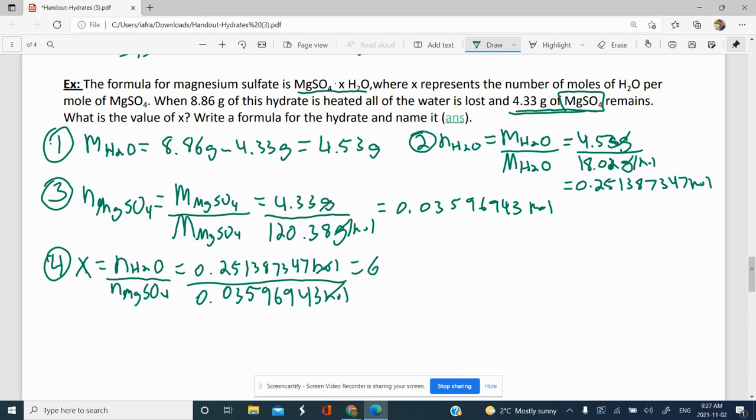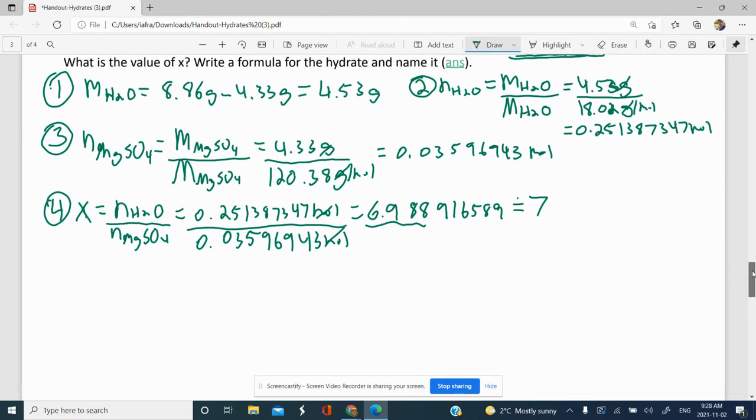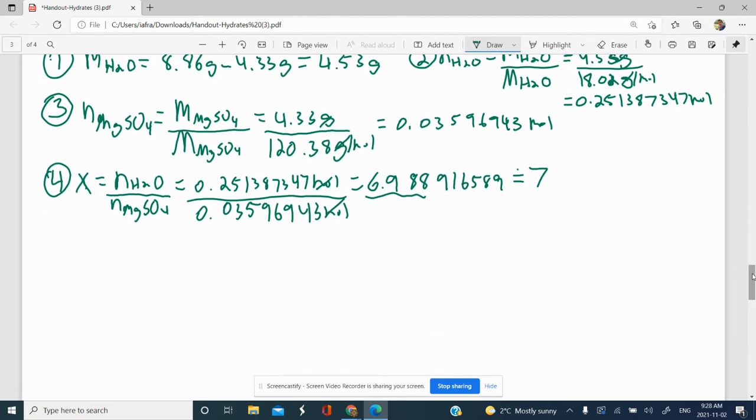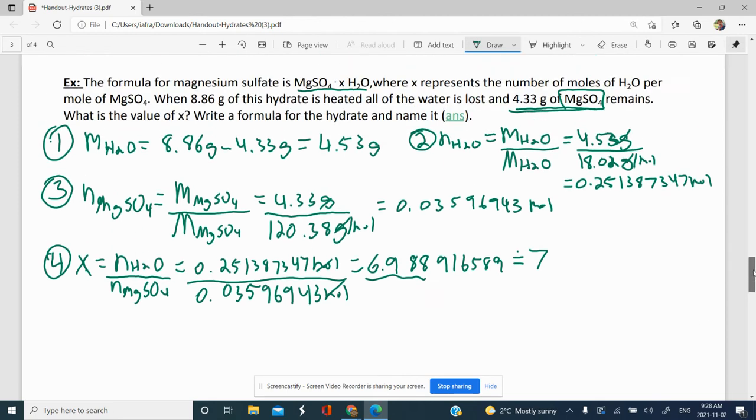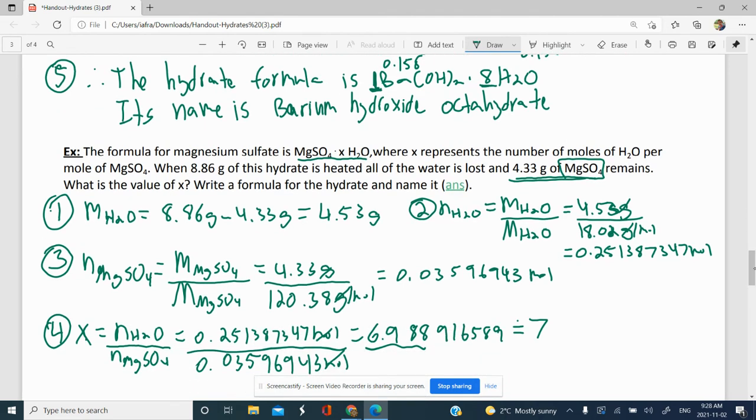7347 divided by our answer, we get 6.988916589, which we can round because it's within our rounding region there, to approximately 7. And so that's the x value. There's seven water molecules attached to our compound. So what I want to do is write down the answers. The question was basically asking for it. It's nice to go back and check.